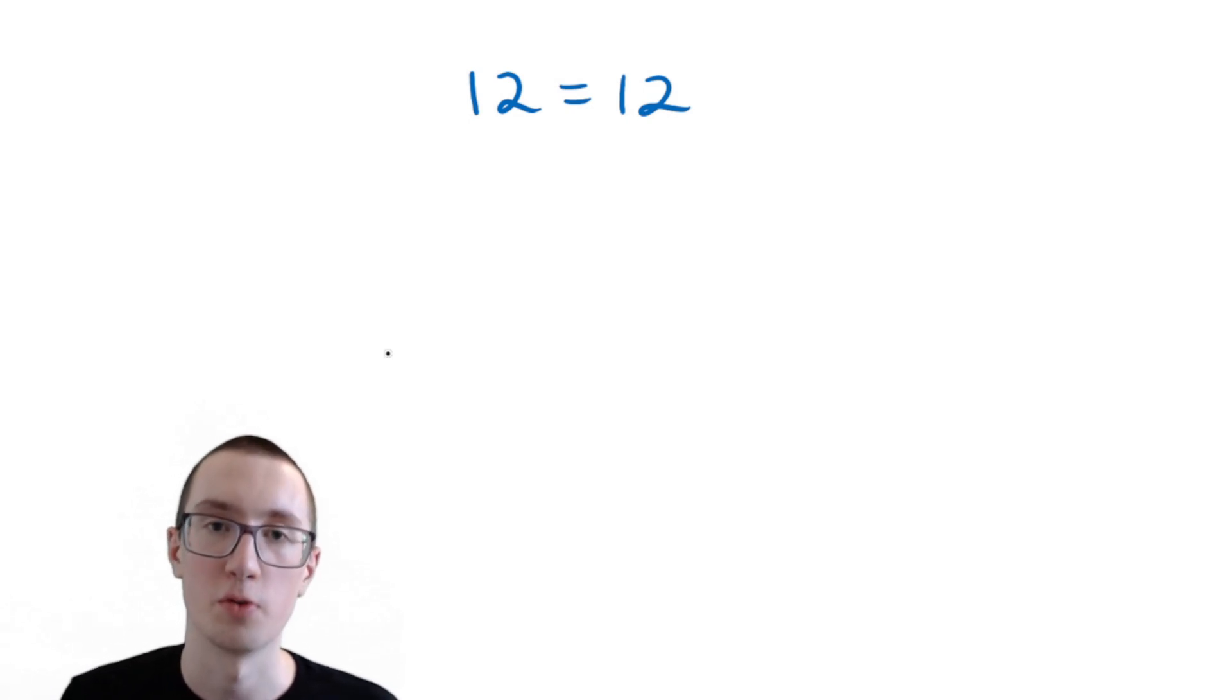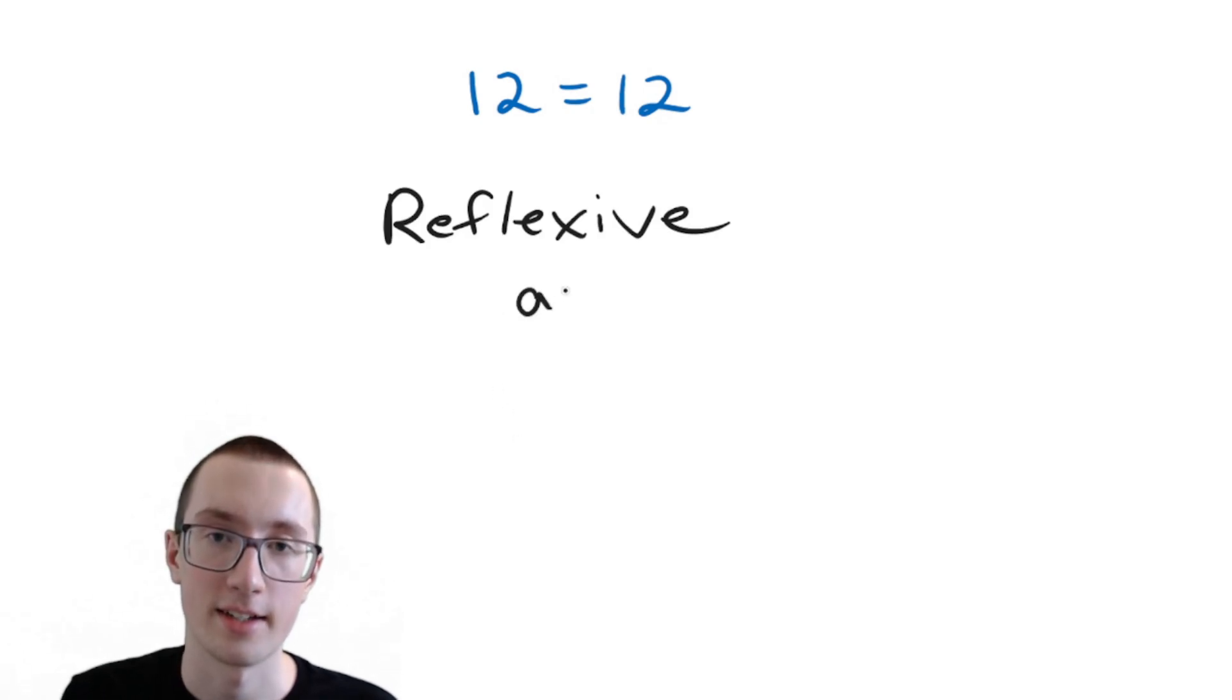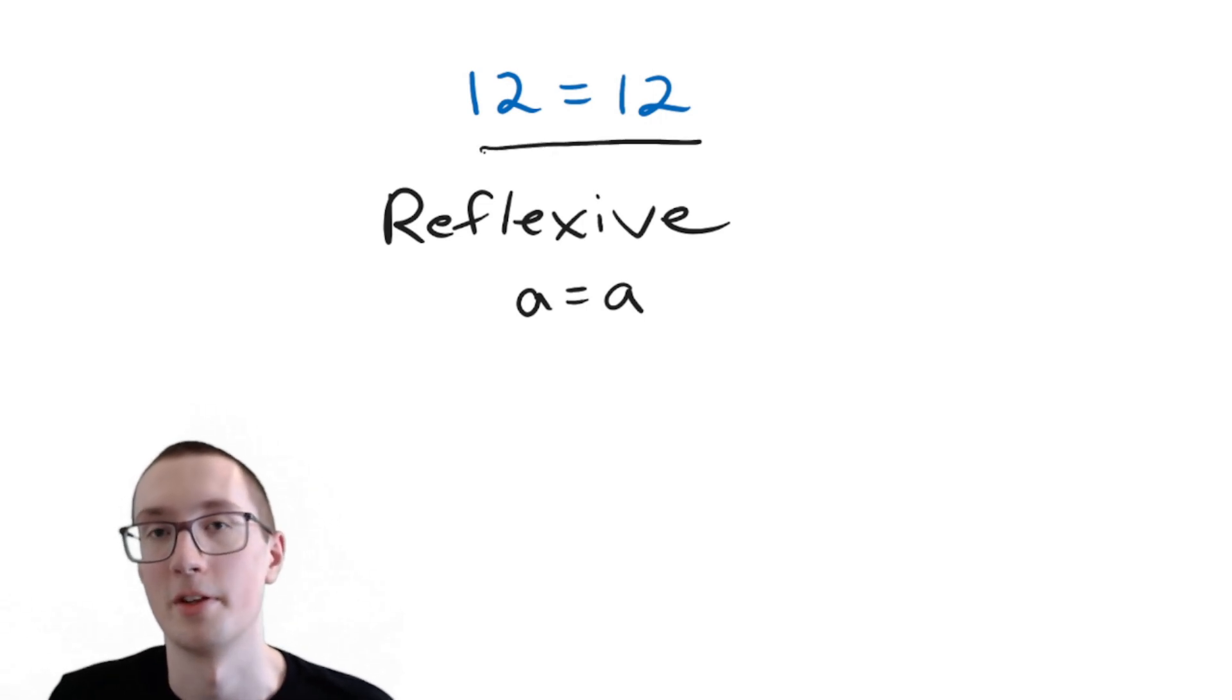this should remind you of the very obvious one at the beginning, which says that A equals A. And that was called the reflexive property, which says that A equals A. That seems to fit this. 12 equals 12, A equals A, they're the same thing, right? So this is dealing with the reflexive property.